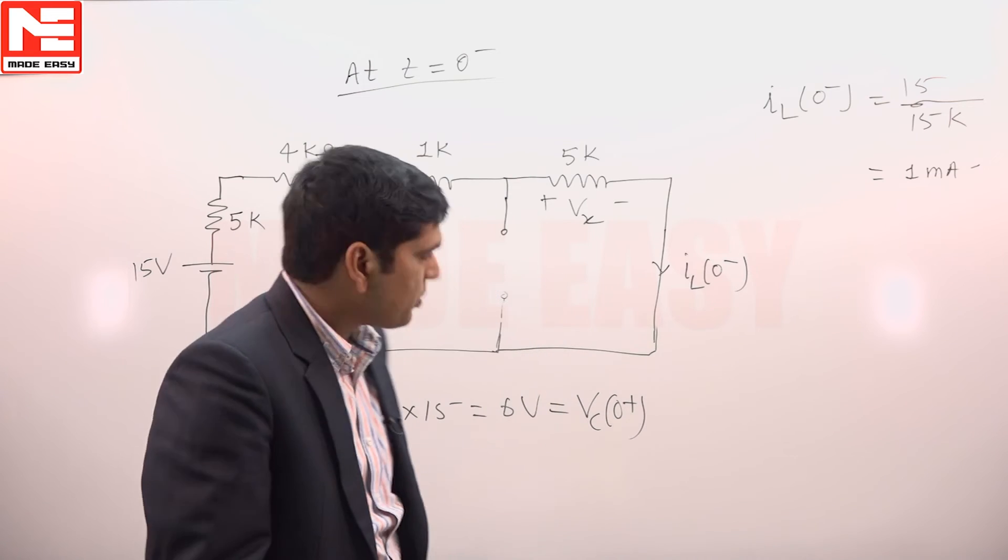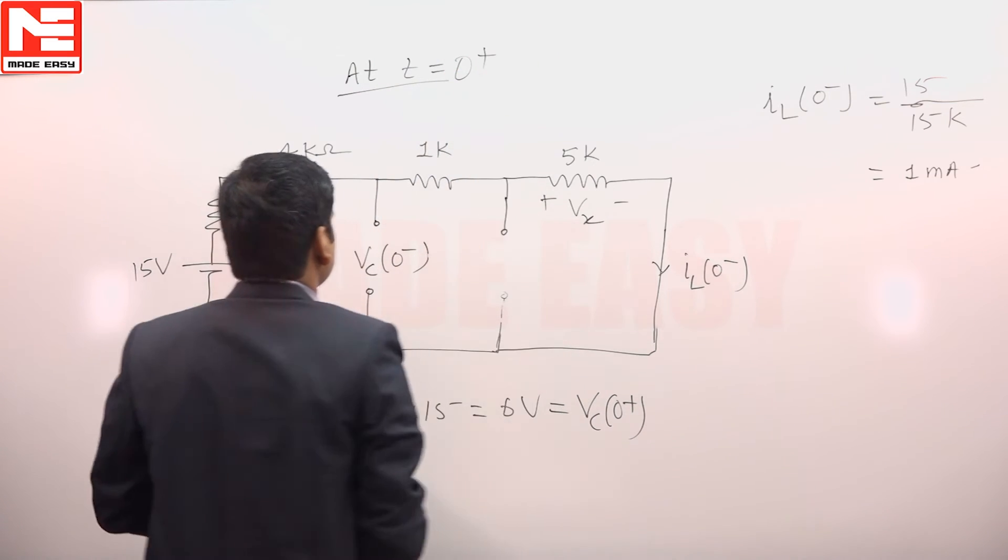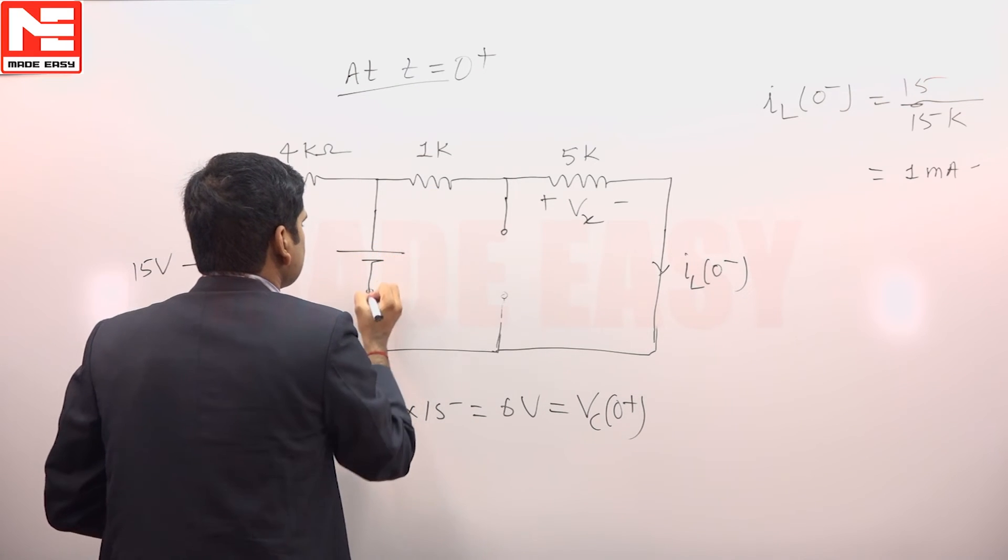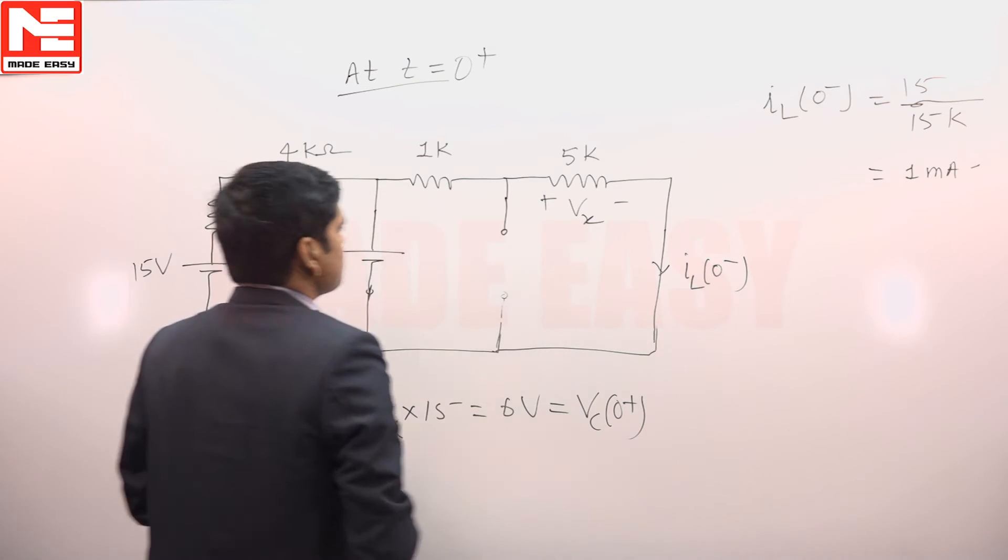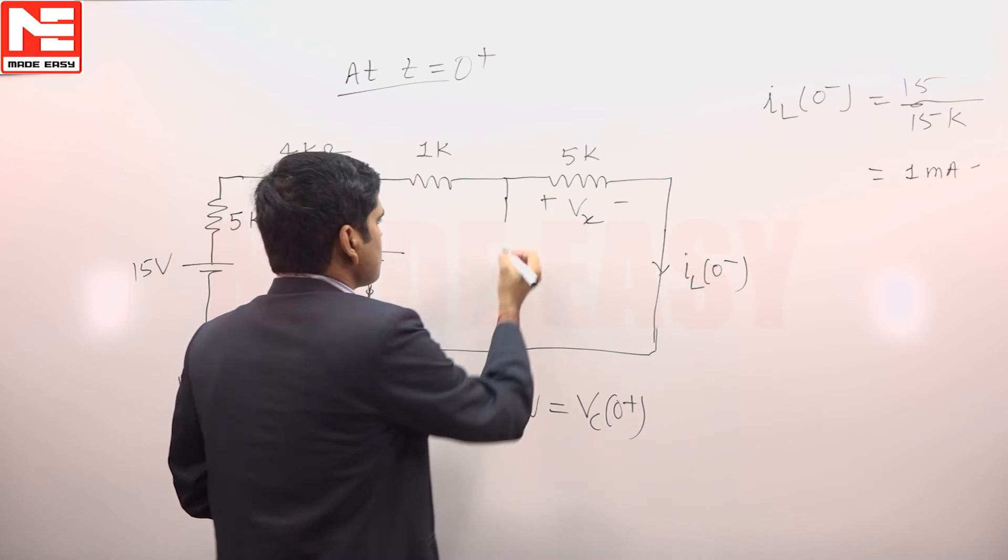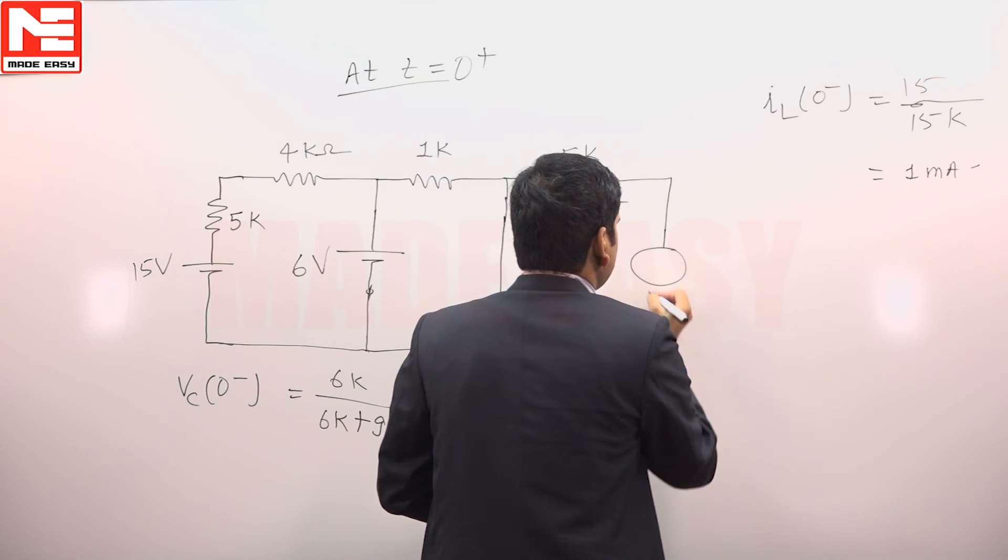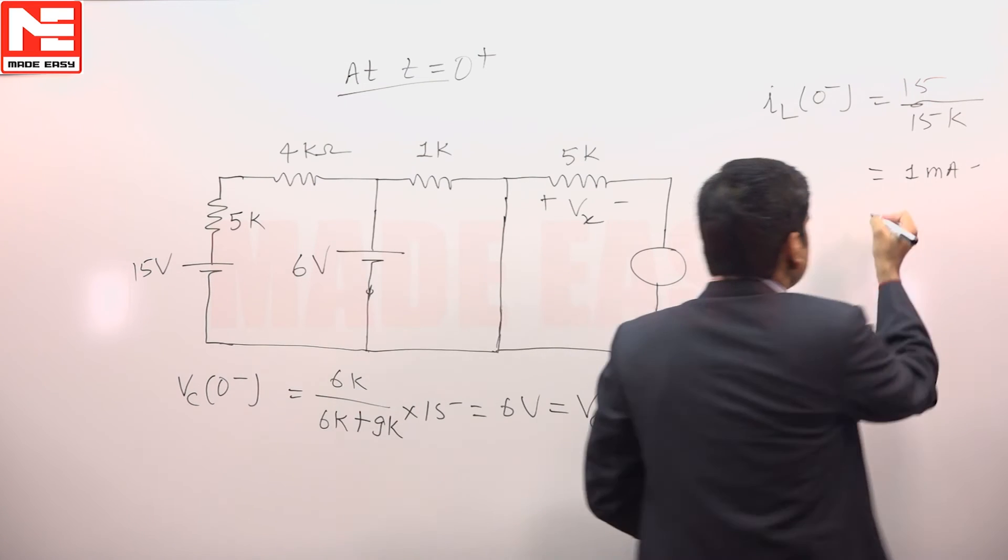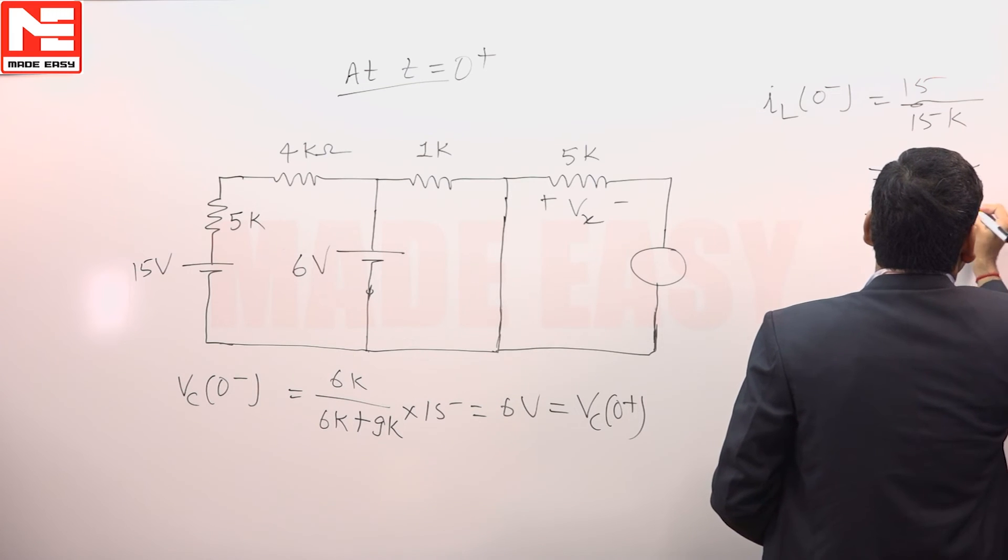The circuit at T is equal to 0 plus can be drawn as this circuit at 0 plus. This can be replaced by a 6 volt source VC 0, 6 volt. This switch is closed at T is equal to 0 and this can be replaced by a current source since inductor does not allow sudden change of current.